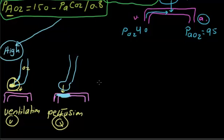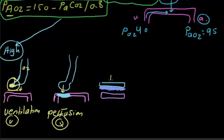Now imagine the alveolar wall and capillary wall — sometimes there is infiltration or fibrosis of the alveoli, also called interstitial fibrosis. In this case, oxygen is present on the alveolar side but cannot diffuse across because of the fibrosis. We call this a diffusion defect. These are the three main causes of high A-a gradient.